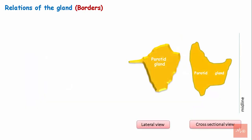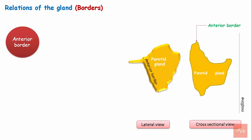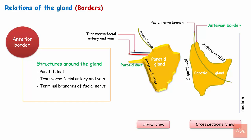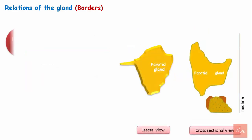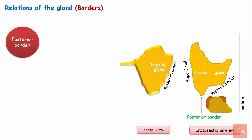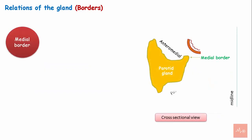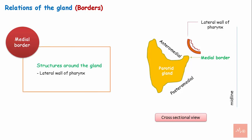The parotid gland has three borders. The anterior border separates the anteromedial surface from the superficial surface. Structures related to the anterior border are the parotid duct, transverse facial artery and vein, and the terminal branches of the facial nerve — the temporal branch, zygomatic branch, upper and lower buccal branch, marginal mandibular branch, and the cervical branch. The posterior border separates the posteromedial surface from the superficial surface; related structures are the posterior auricular nerve, posterior auricular artery and vein, and the sternocleidomastoid muscle. The medial border separates the anteromedial surface and the posteromedial surface and is associated with the lateral wall of the pharynx.